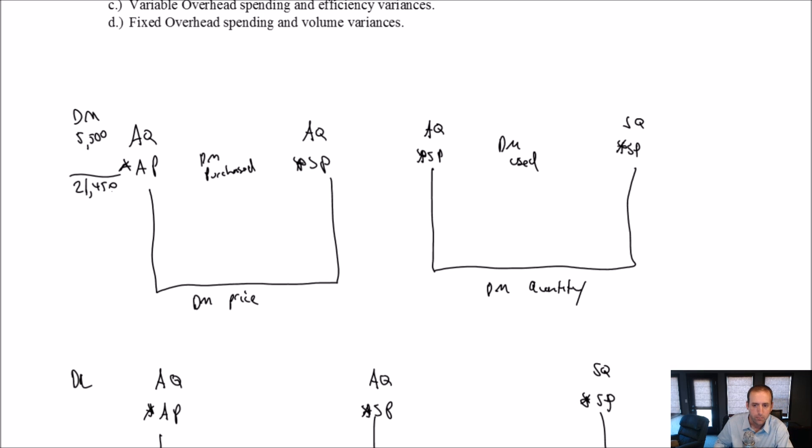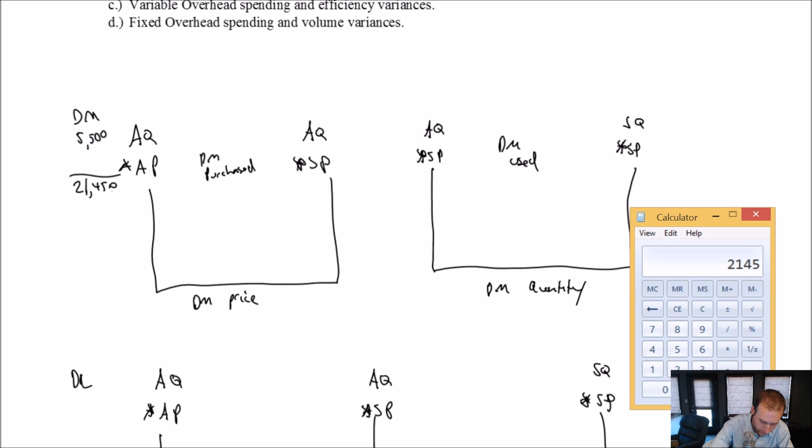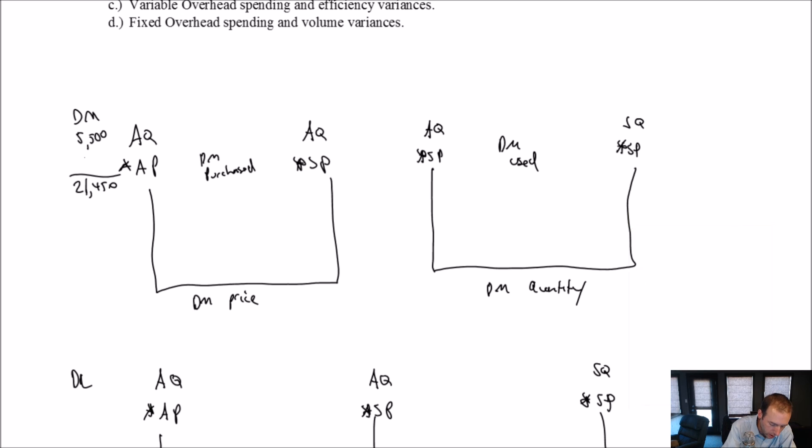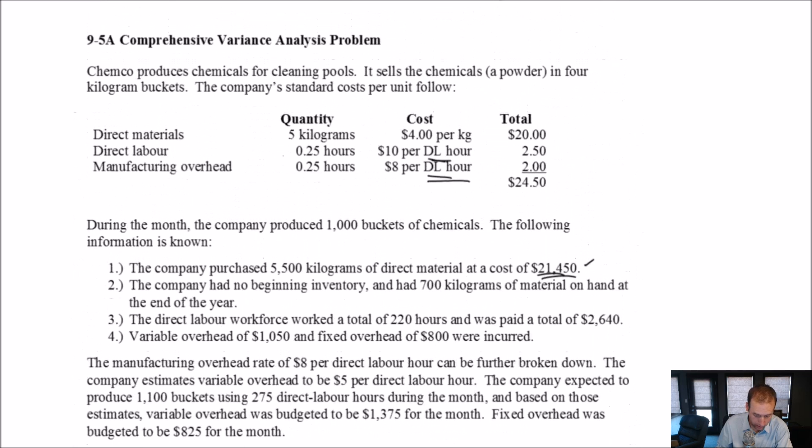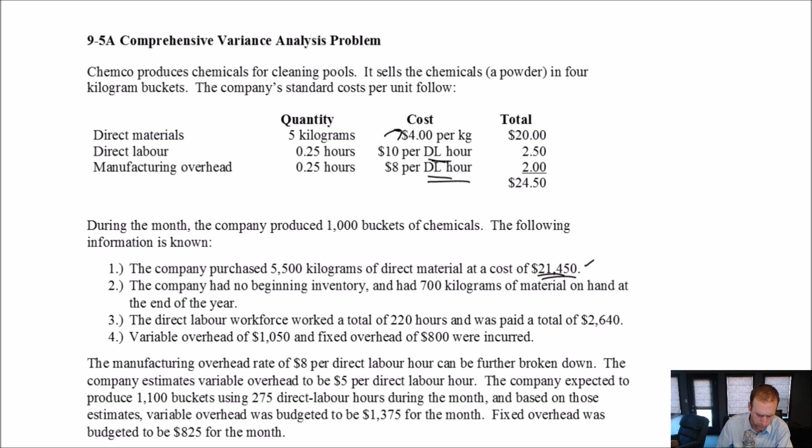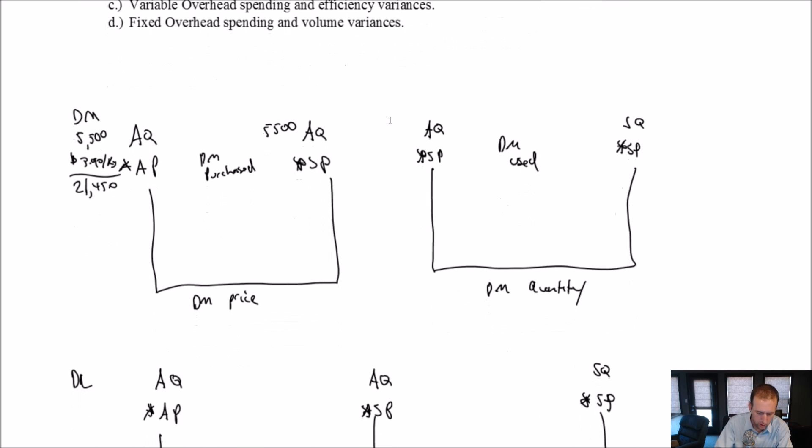So I can kind of work backwards. 21,450 divided by 5,500, I can work backwards and say oh, it must have cost me $3.90 per kilogram. So there's my AQ 5,500, my AP $3.90, and the total $21,450. Looking at the other side of the AQ, 5,500. My standard price per kilogram? I had seen that. That was $4 per kilogram on my standard cost section. So 5,500 times 4 is $22,000. The difference is $550.